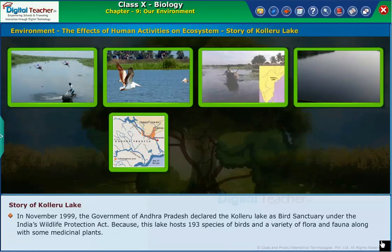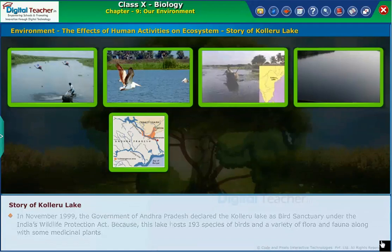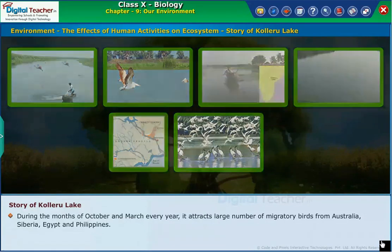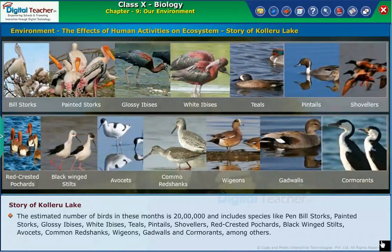In November 1999, the government of Andhra Pradesh declared the Kolaru Lake as a bird sanctuary under India's Wildlife Protection Act, because this lake hosts 193 species of birds and a variety of flora and fauna, along with some medicinal plants. During the months of October and March every year, it attracts a large number of migratory birds from Australia, Siberia, Egypt and Philippines. The estimated number of birds in these months is 20 lakhs.